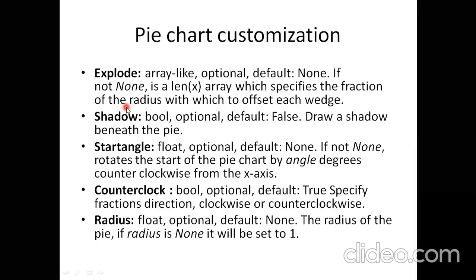explode means taking out a particular pie or showing it differently outside the complete circle. Explode takes an array whose length equals the number of elements in x. Passing values controls how much each pie slice is pulled out. shadow takes a boolean: if shadow equals to true, the pie looks slightly 3D.